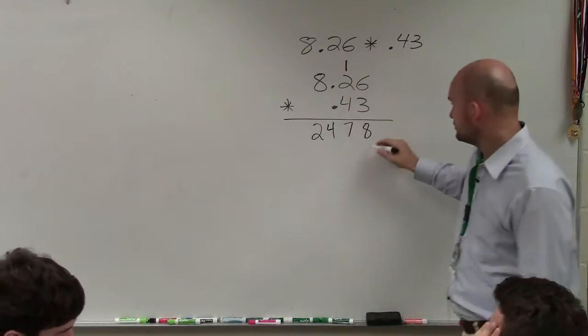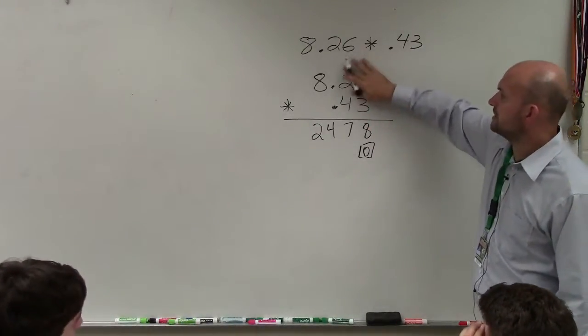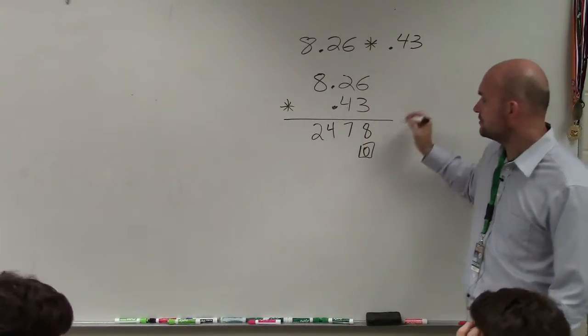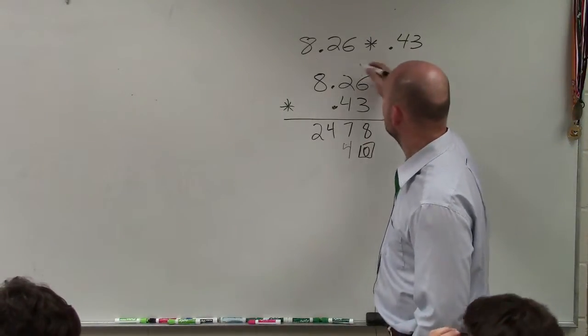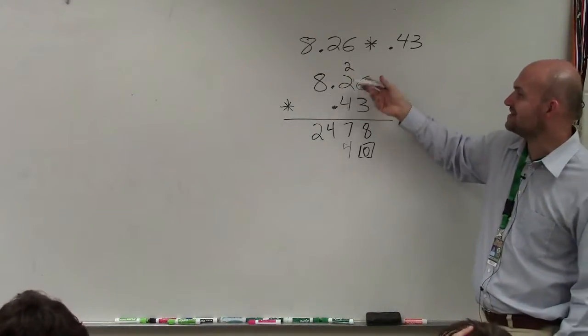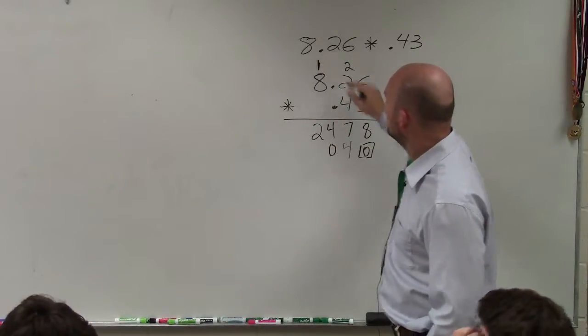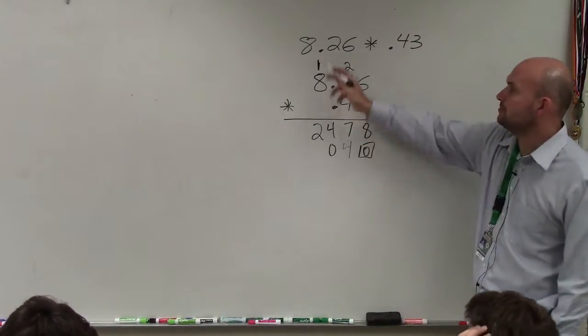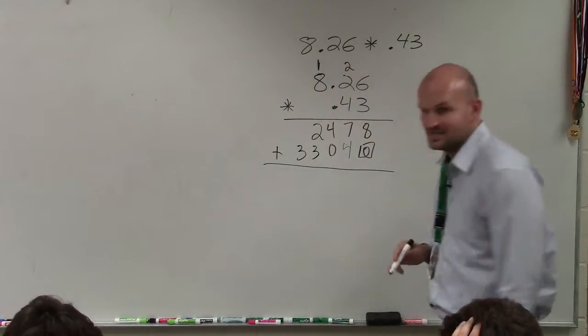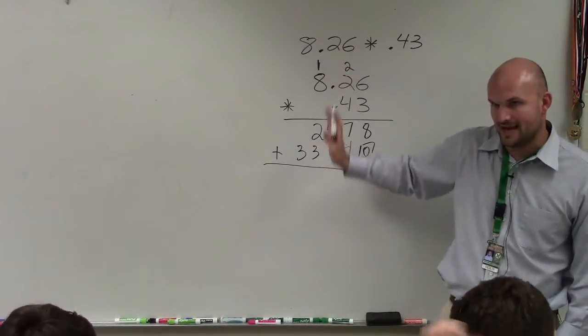Then again, we need to do our placeholder, so I'll put a 0 for my placeholder. Erase the rest of my remainders. That's why having pencils is very helpful. 4 times 6 is 24. Bring over the 2. 4 times 2 is 8, plus 2 is 10. And then 4 times 8 is 32, plus 1 is 33. Notice how I have not done anything with the decimal point yet. We're not going to do this vertically like add and subtract.